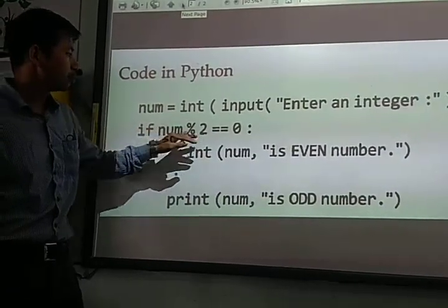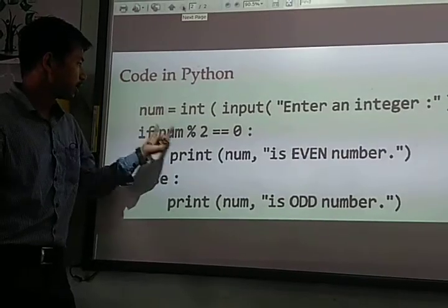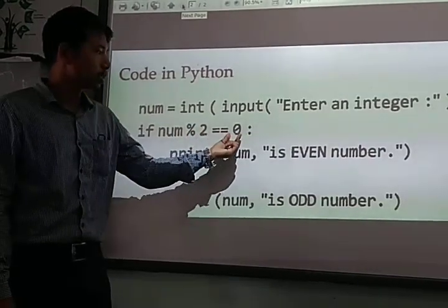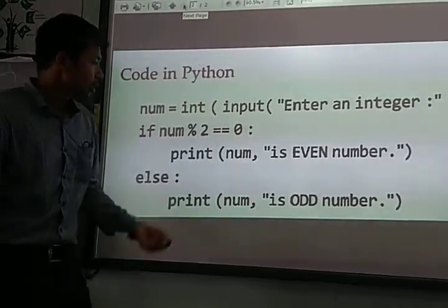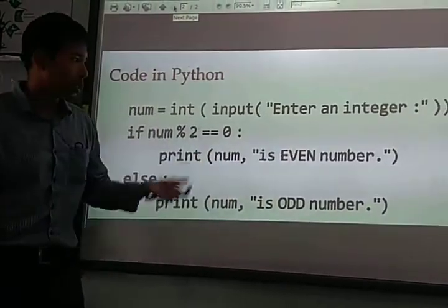If num mod 2 is equal to 0. So if num, this mod 2 means divided by 2 is equal to 0, means the remainder is 0, then print num is even. Means this number is even, the user inserted.